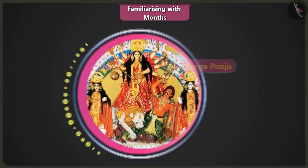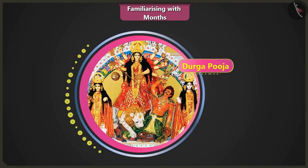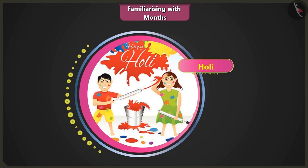This is the festival of Durga Puja, celebrated in East India as a symbol of victory of good over evil. This festival is celebrated in the month of October. The festival of Holi is celebrated in the month of March in Central India. Uncle, Holi is a festival of colors, I like it very much. I too like it.